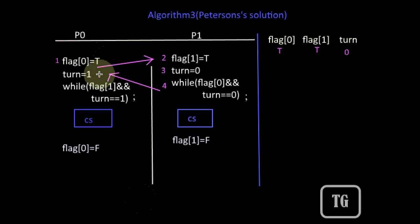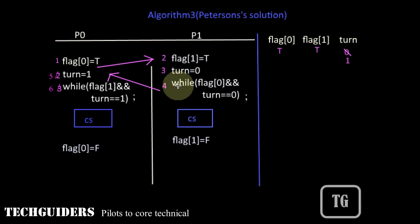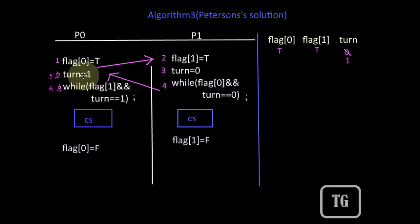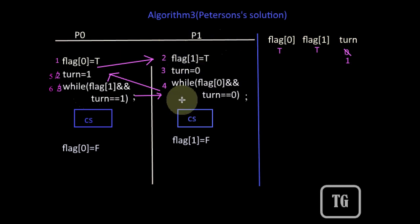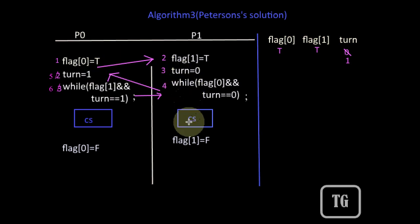After some time, preemption will occur and P0 will gain the processor. P0 will resume execution at this point by giving the value of turn to 1 — now turn equals 1. Since flag[1] is true and turn equals 1, it means the last update on turn is performed by P0. Thus P0 will never enter the critical section — it will wait in the while loop. After some time, again preemption will occur and P1 will regain the processor. P1 will continue with the while loop, but the value of turn is now 1. Thus P1 will be able to enter the critical section. Since P1 crossed this instruction first, prior to P0, P1 will eventually be able to enter the critical section first.